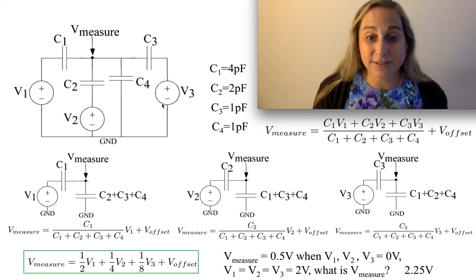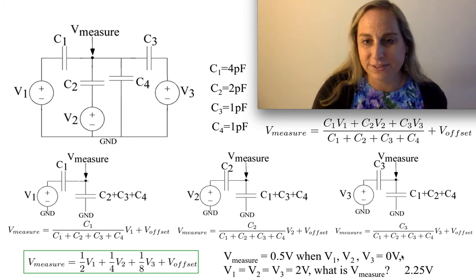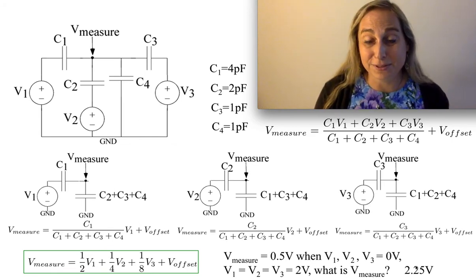So as a result, I know the offset voltage is half a volt. So I add half a volt to that 1.75 volts, and I get 2.25 volts.